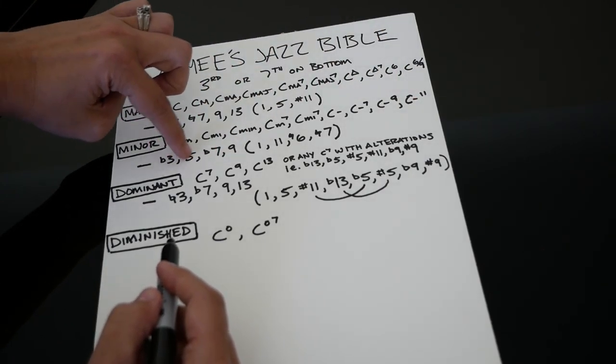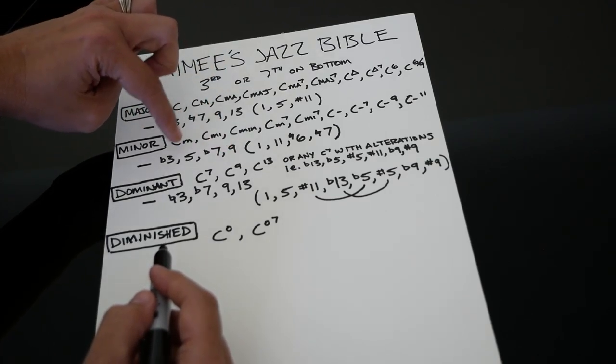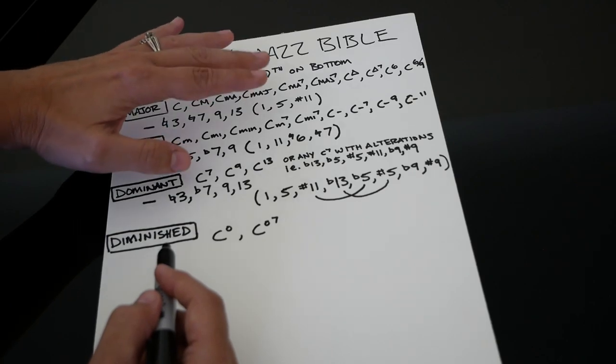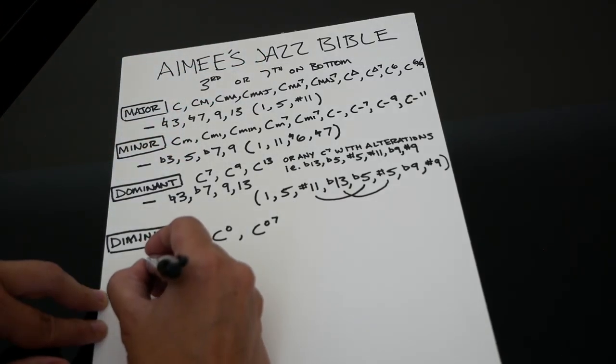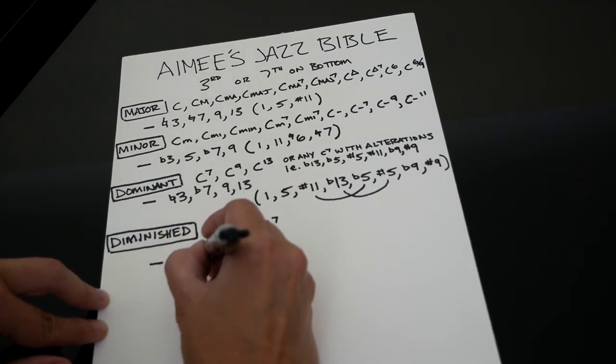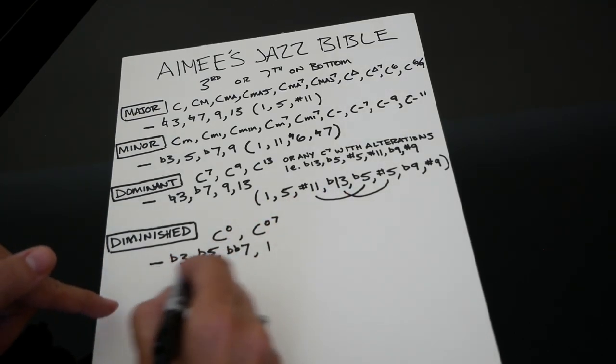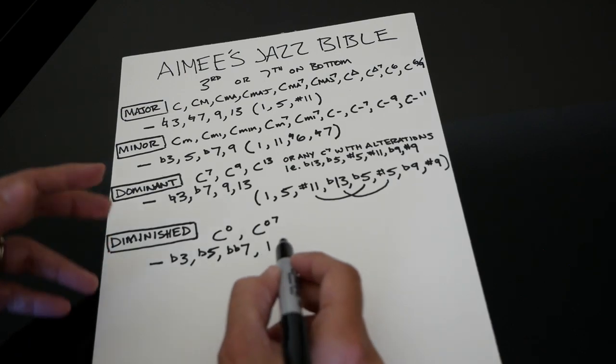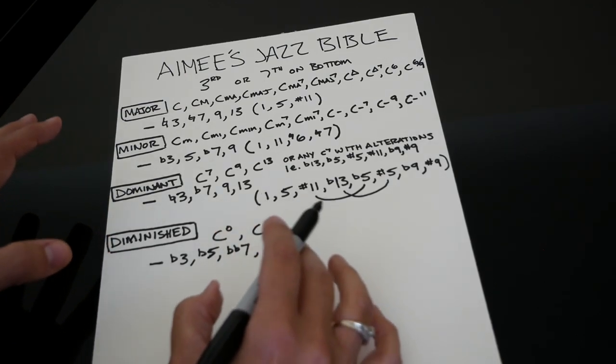That's what jazz players do - we make things more interesting. The important notes to play over a diminished chord are the flat three, the flat five, the double flatted seven, and the one. The one is okay with me all the time on diminished chords because it's kind of necessary to hear it for the movement of the chord.